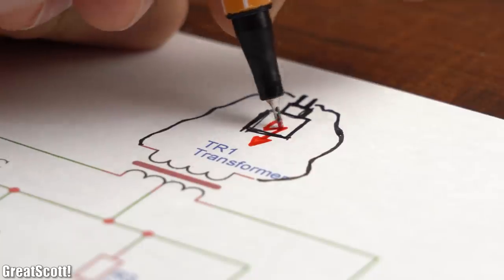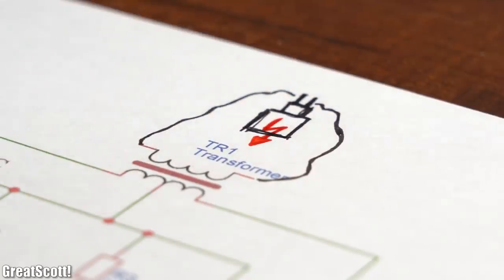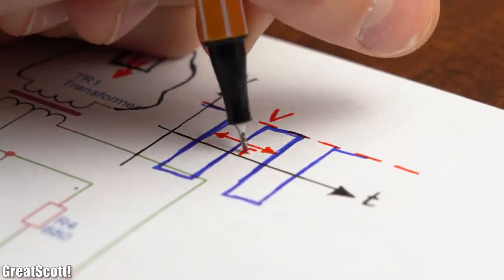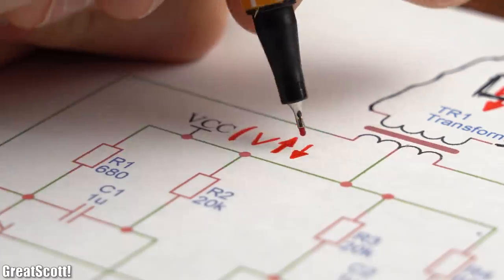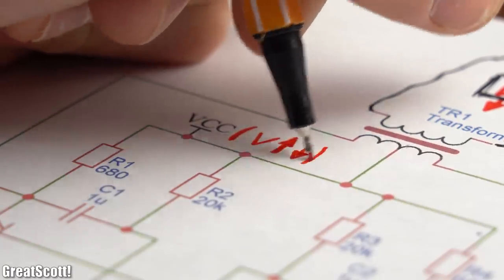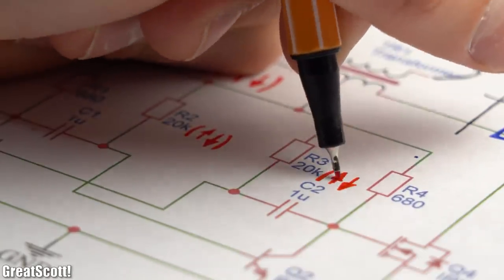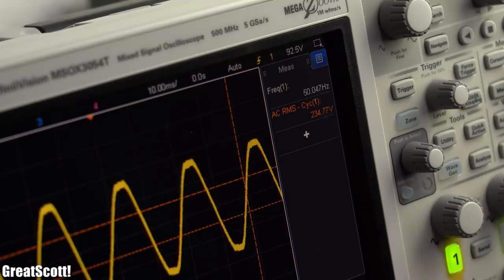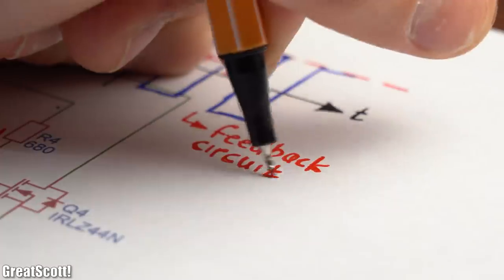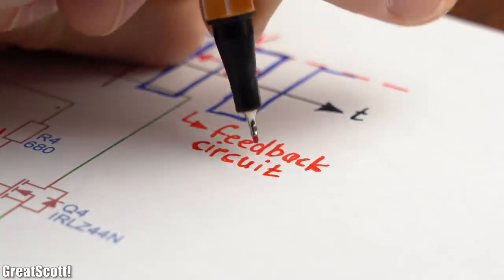And last but not least, the output also changes noticeably if we connect a load. This can be a problem for sensitive electronics and can be pretty much only solved if we monitor the voltage and frequency on the output and adjust the input voltage as well as maybe the resistance of the RC timer circuit with a digital potentiometer in order to always hit that 50Hz 230V RMS sweet spot. So basically put, a feedback circuit is missing.